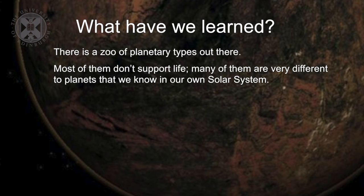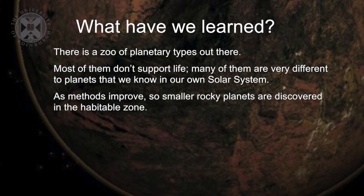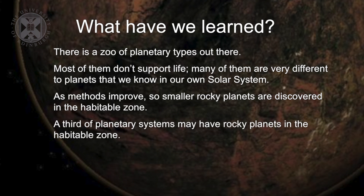Some of them are too close to their star. They're probably too hot to support life. Some of them may be too far out and too cold. But as methods are improving, we're beginning to find smaller rocky planets that may be discovered in the habitable zone. A third of planetary systems may have rocky planets in the habitable zone, based on the observations that we have so far.